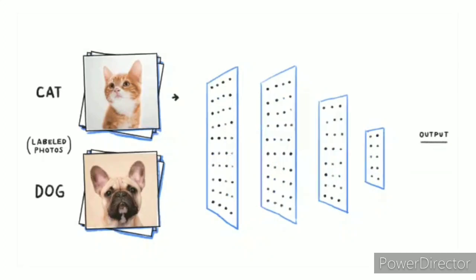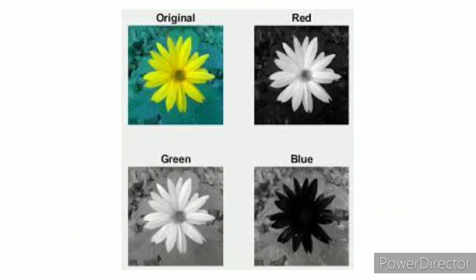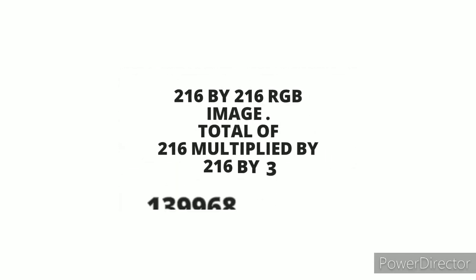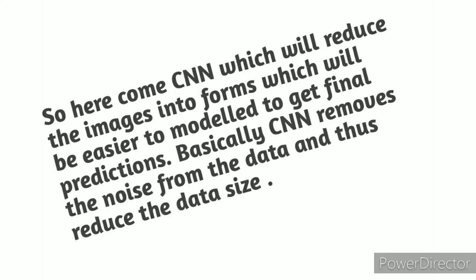How is computational power saved through CNN for images? An RGB image has three channel images: red, green, and blue. Consider a 216 by 216 RGB image. It has a total of 216 × 216 × 3 = 139,968 pixels. With a simple feedforward neural network it will be very difficult to process so many features at a time due to lack of computational power. CNN reduces the images into forms which are easier to model to get final predictions, basically removing noise from the data and reducing the data size.